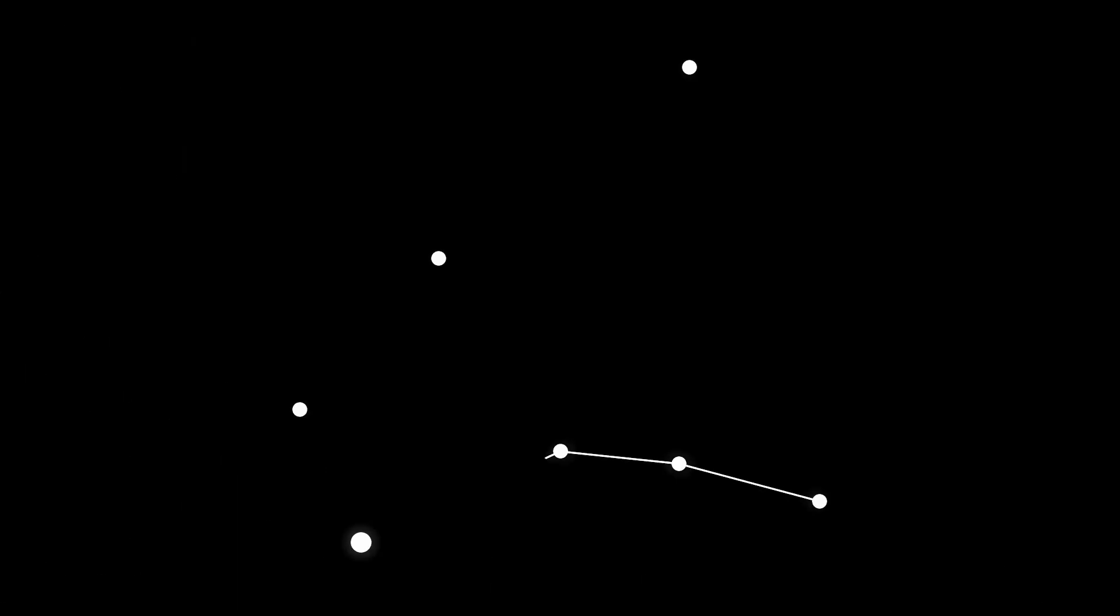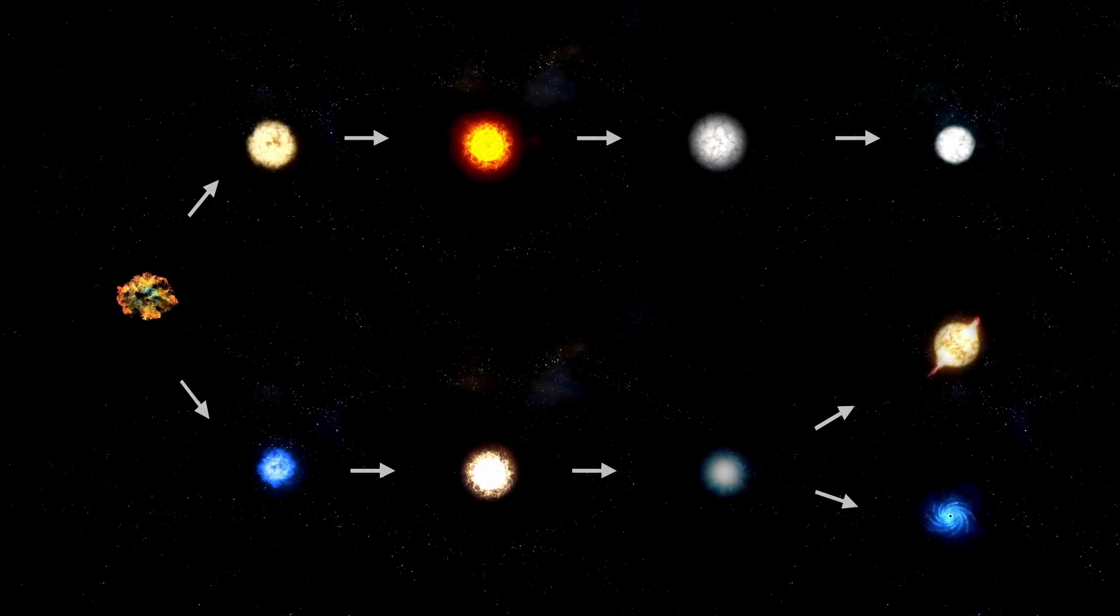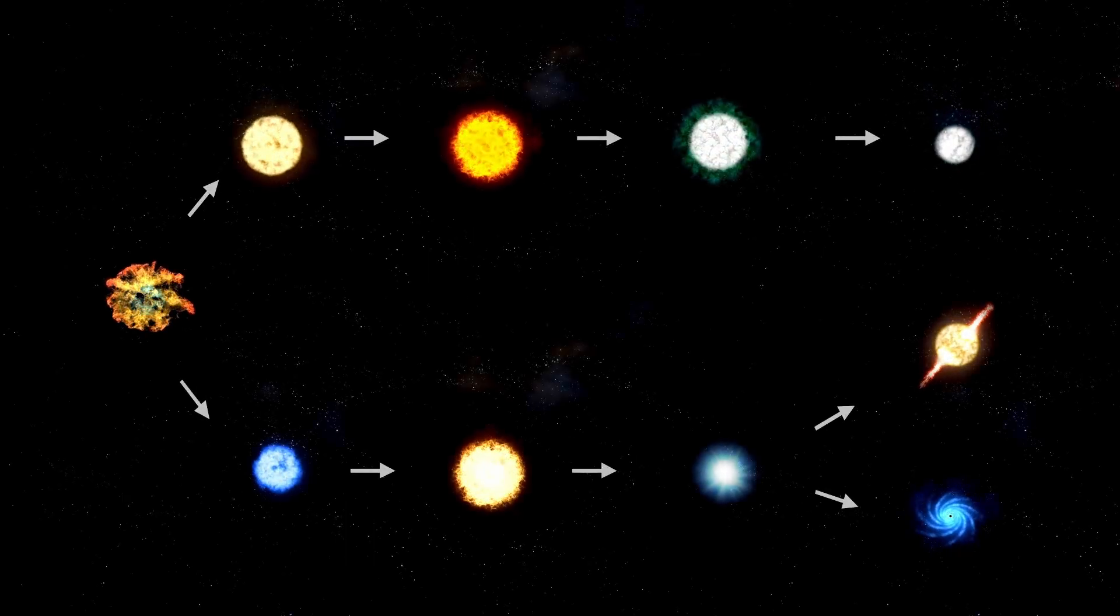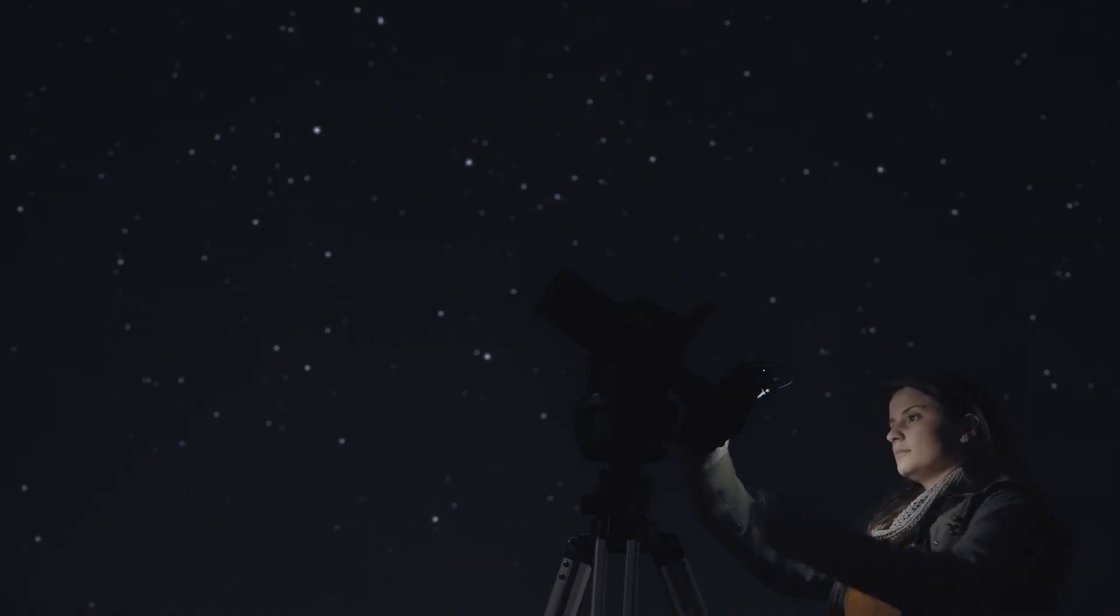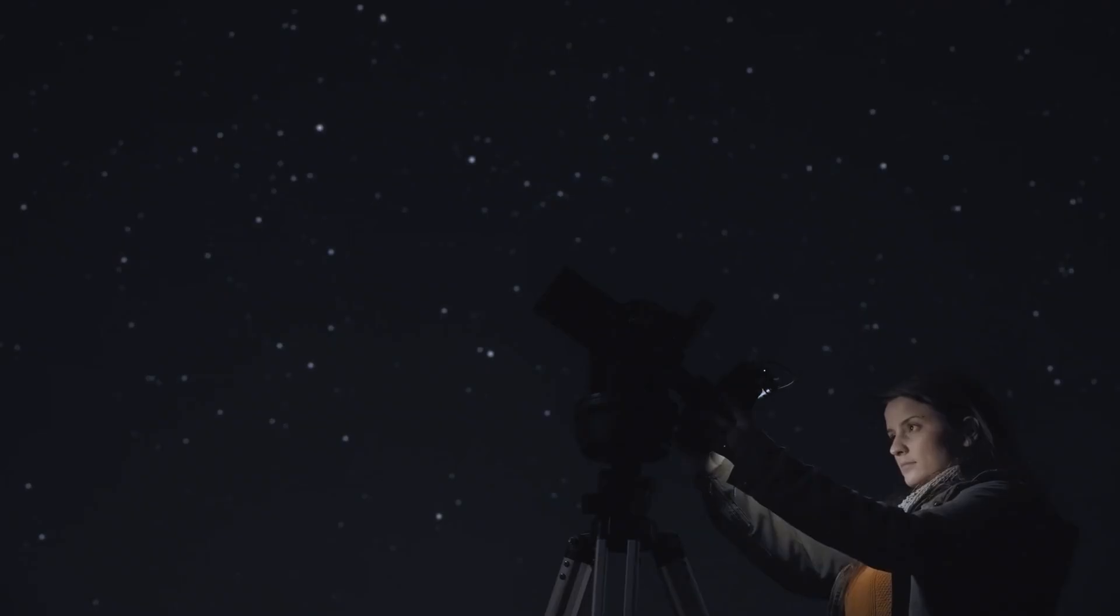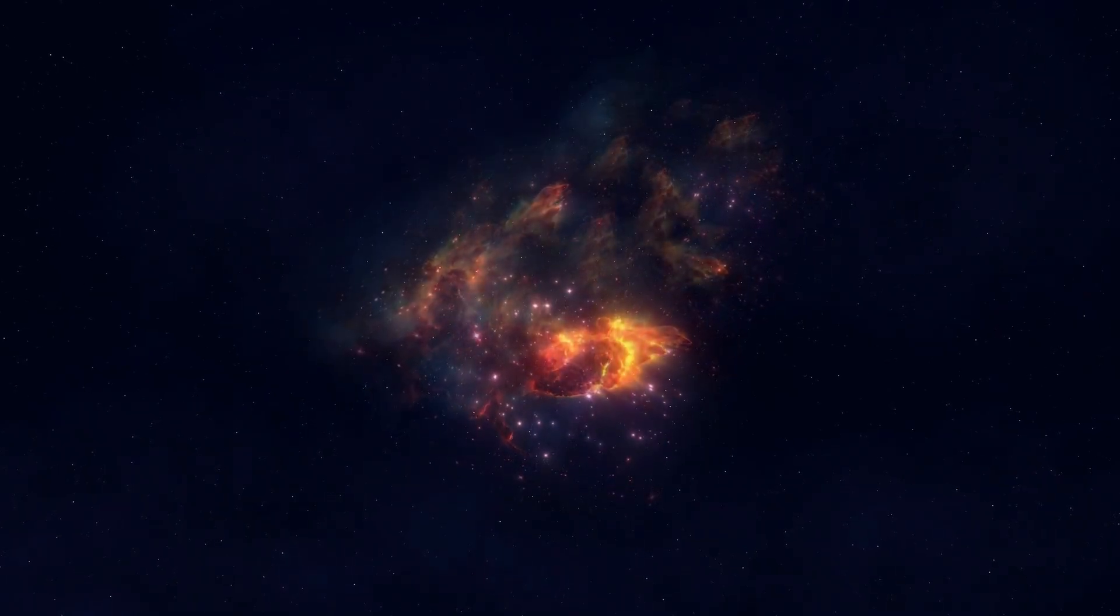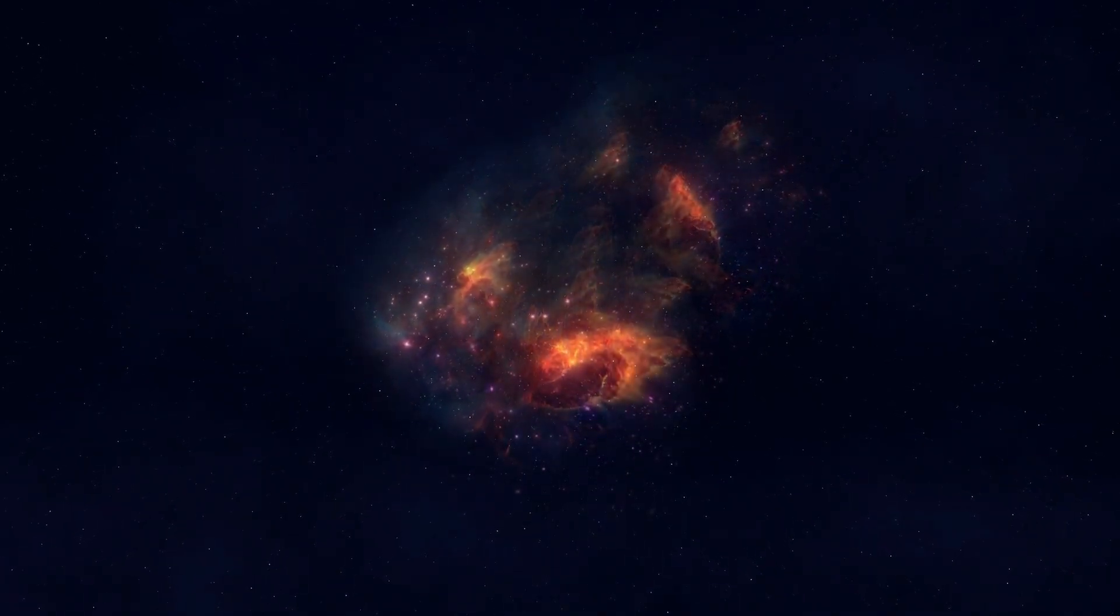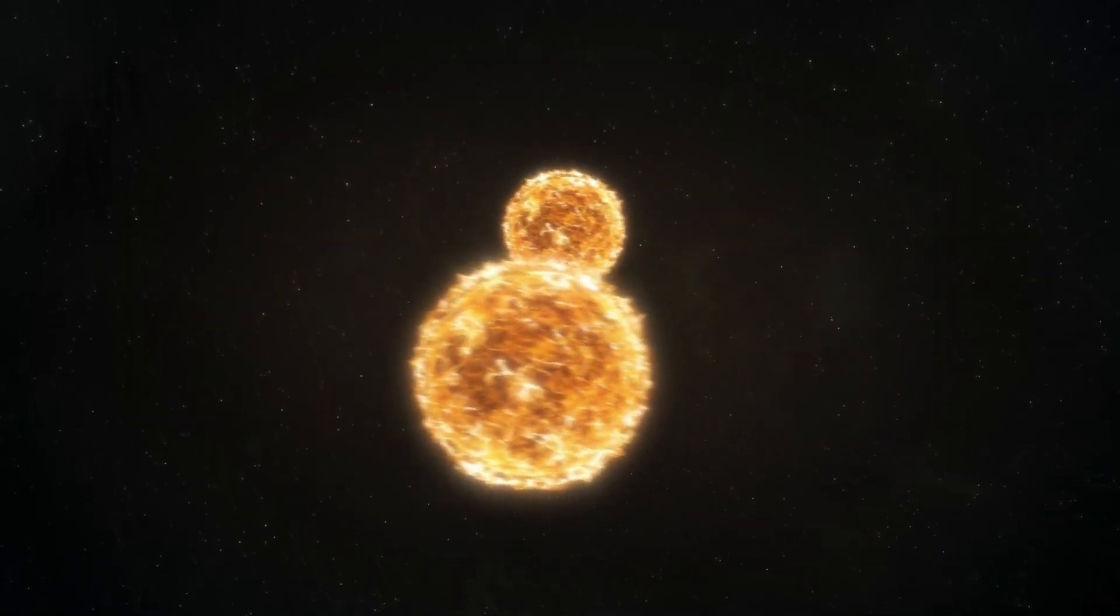Then came an image that left astrophysicists speechless, the perfect ring of galaxies stretching over 1.3 billion light years. This was not a cluster nor a visual distortion caused by gravitational lensing, but a genuine circular chain of galaxies. The existence of this ring challenges our understanding of gravity, entropy, and cosmic structure formation. Some theorists believe it could be evidence of topological defects in spacetime, cosmic scars formed when the universe cooled too rapidly after the big bang.